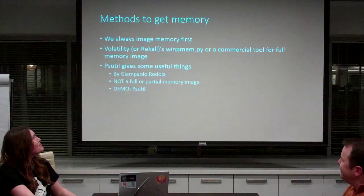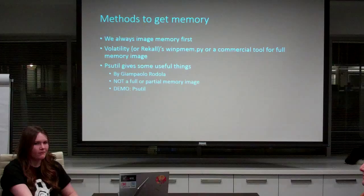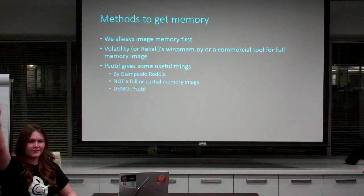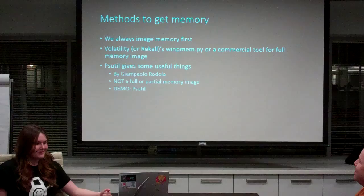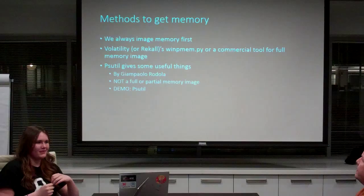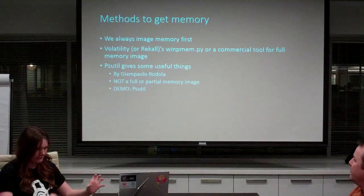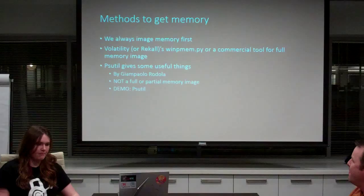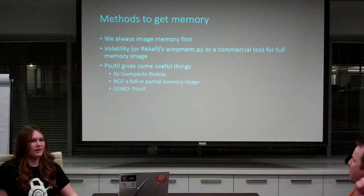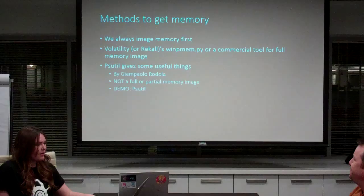Why do we always get memory first, as opposed to going after files on the hard disk? It's volatile — we call this volatile data. The suite we use to look at it is called Volatility, because everything you do to a computer will change memory, including the tool you load. So the first thing you do is get memory. There's an open source tool, WinPmem, which is part of Volatility or Recall — Recall is Google's work with Volatility. There are also commercial tools available.